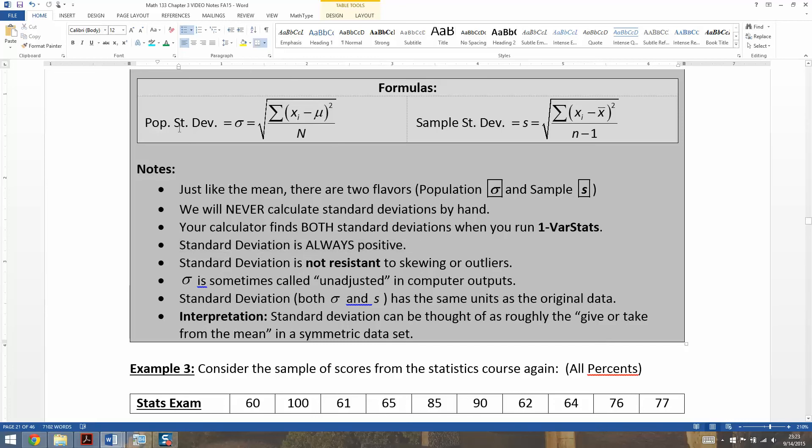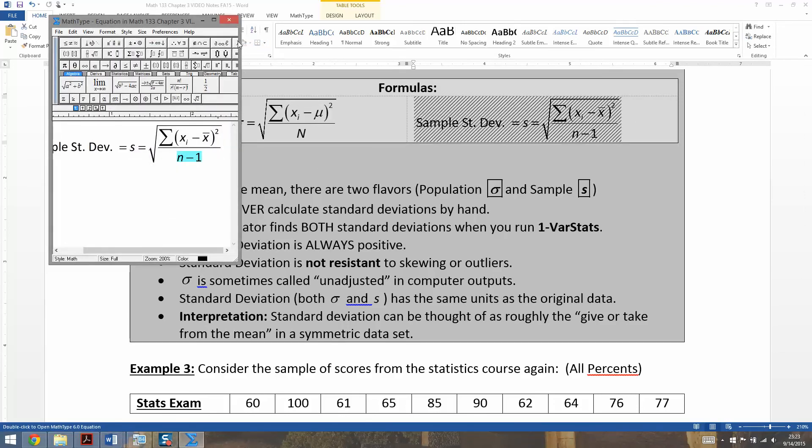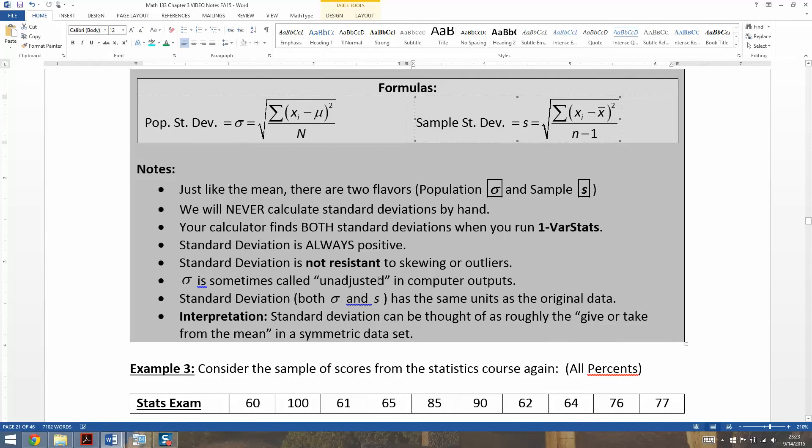Now the sigma one, this one right here, is called unadjusted, because the one on the right is adjusted. That's why the denominator is n minus 1. It's adjusting for something called sampling error, namely that when you have a sample, it's never a perfect representation of the population. And there's more to it than that, but that's all we're going to cover in this particular course. So when you divide by n minus 1, you're sort of adjusting for the fact that it's a sample. So the sigma one is unadjusted. So you're not changing because it isn't a sample, it's the whole population.